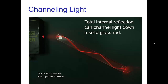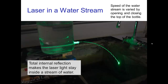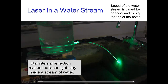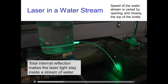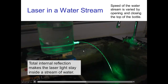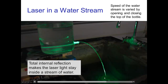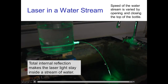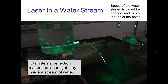Another example of total internal reflection is the channeling of light seen here — a laser beam is reflected as it passes down a glass rod. This is the basis for fiber optic technology. Here's another example of the same effect: a laser is passing into some water that is spurting out of a hole, and I'm adjusting the water pressure to make it spurt faster or slower. The laser beam stays inside the stream of water — it's like a pipe of water maintaining that laser beam inside of it.